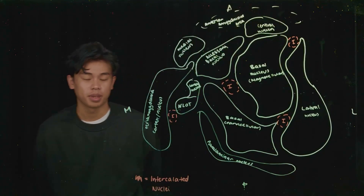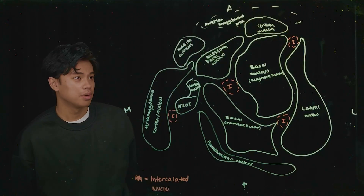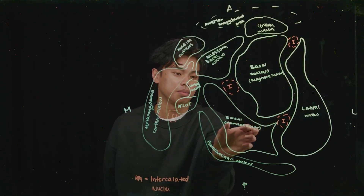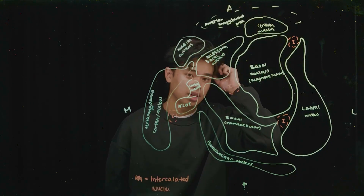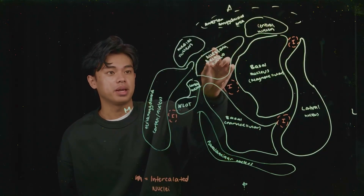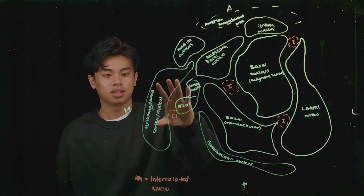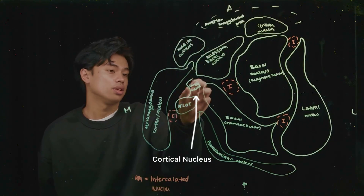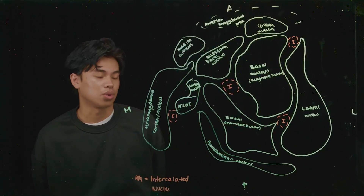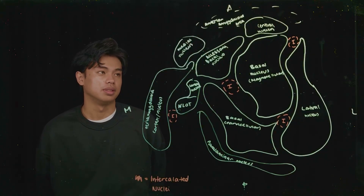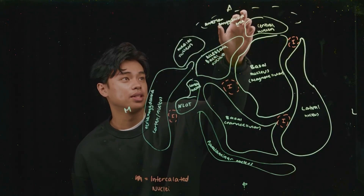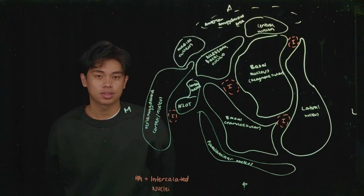This structure, found rostrally to the hippocampus, has 12 to 14 distinct nuclei. We have the lateral nucleus, the basal nucleus — sometimes split into the parvicellular and magnocellular components, though for today we will keep it as the basal nucleus. We also have the central nucleus, the accessory basal nucleus, the medial nucleus, the peri-amygdaloid cortex/nucleus, the cortical nucleus, the nucleus of the lateral olfactory tract, the intercalated nuclei, as well as the anterior amygdaloid area, and the amygdala striatal zone.